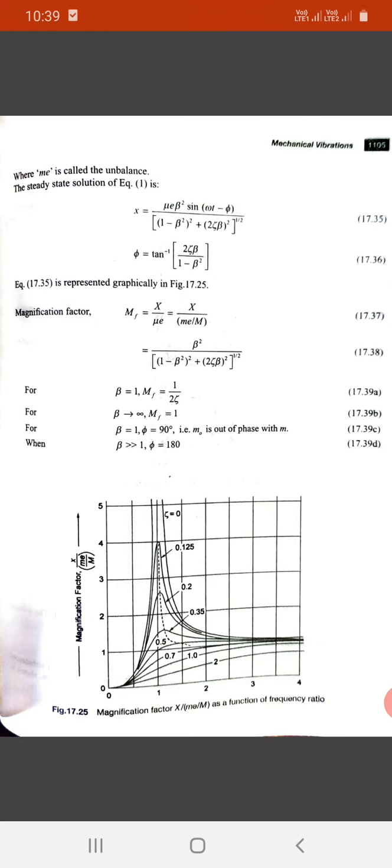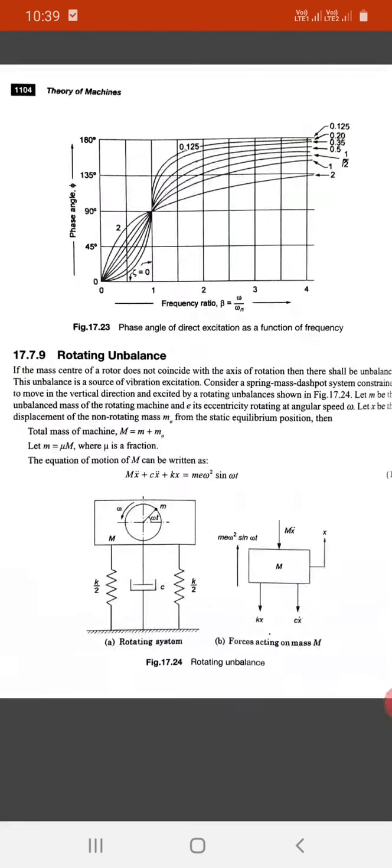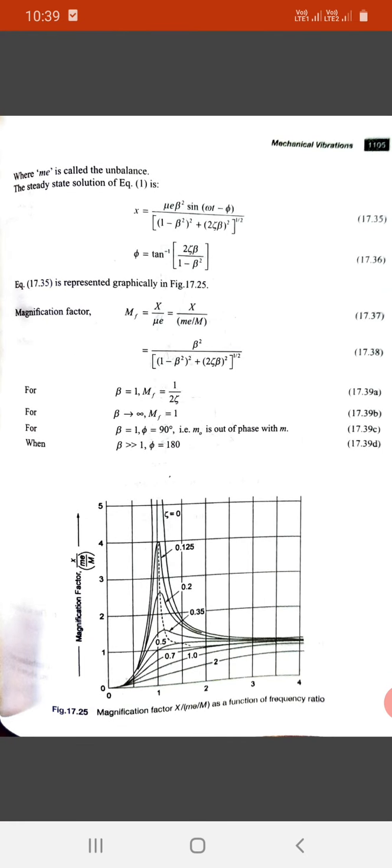Where m e is called the unbalance. Therefore, the steady-state solution for equation one is: X equals mu e beta squared sine omega t minus phi upon square root of bracket one minus beta squared whole squared plus two zeta beta whole squared.